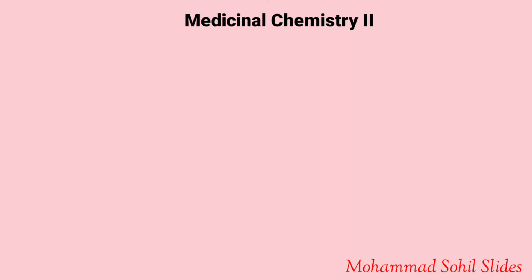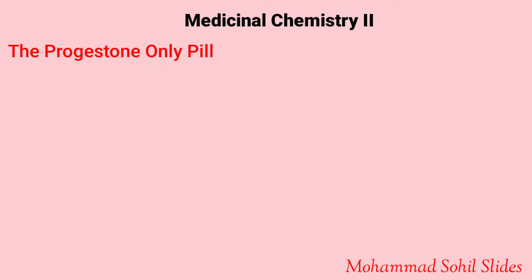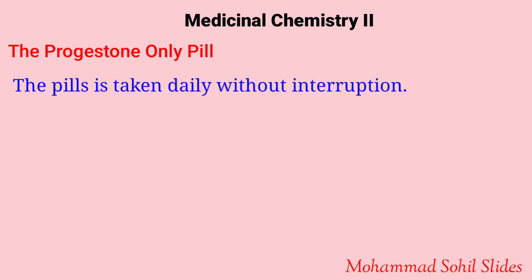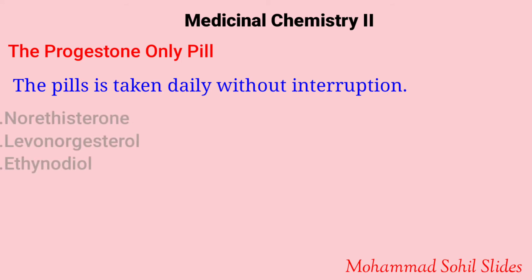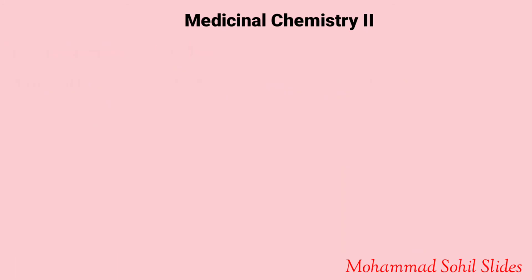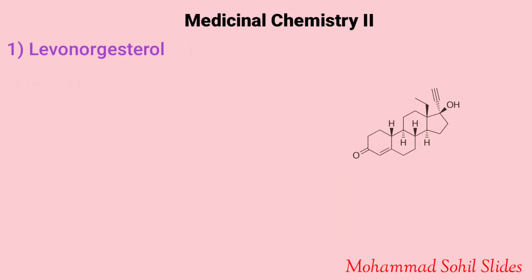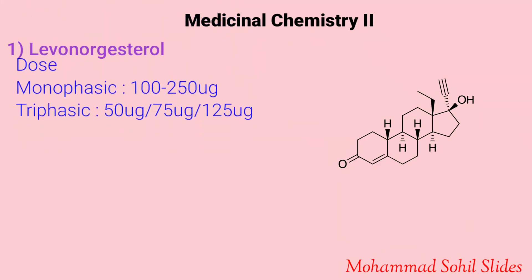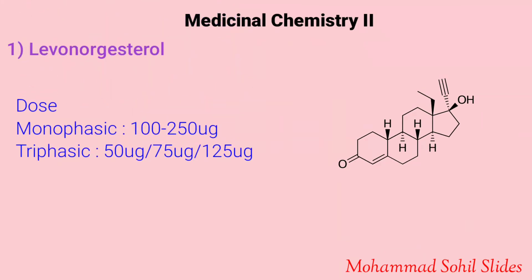Moving forward to the next type: the progesterone-only pill. This pill is taken daily without interruption. Examples of these pills are norethisterone, levonorgestrel, and ethanodiol.